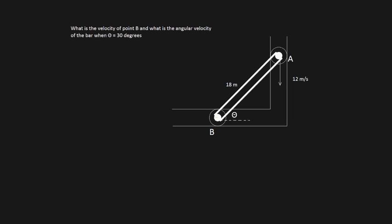Have a shot at this yourself — if you can't answer it, that's fine, come back when you're done and see how you did. First of all, we know that the velocity of B is constrained to be in the horizontal direction, and it's going to be in the left direction, because A is moving down and B needs to get out of the way. No maths needs to be invoked here — this is just common sense.